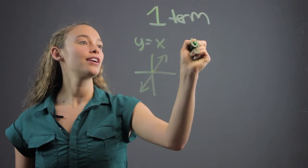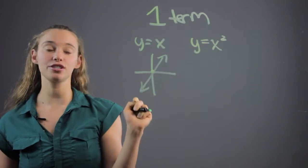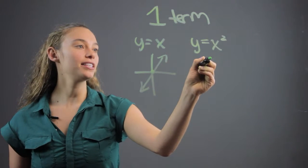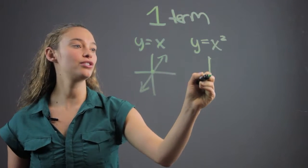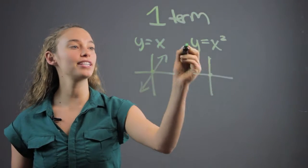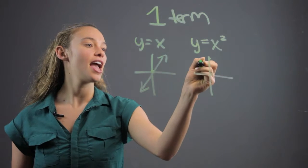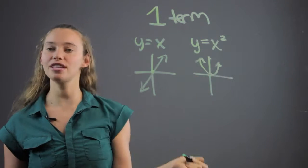If we have a monomial like y equals x squared, again, there's just one term, but in this case it's to the second degree, so it's going to go in two different directions. Again, we know it goes through the origin because the point exists, and it's going to look like this: a parabola. Two different directions.